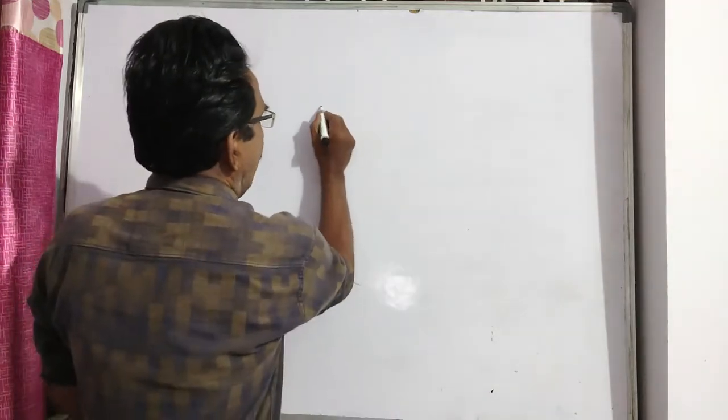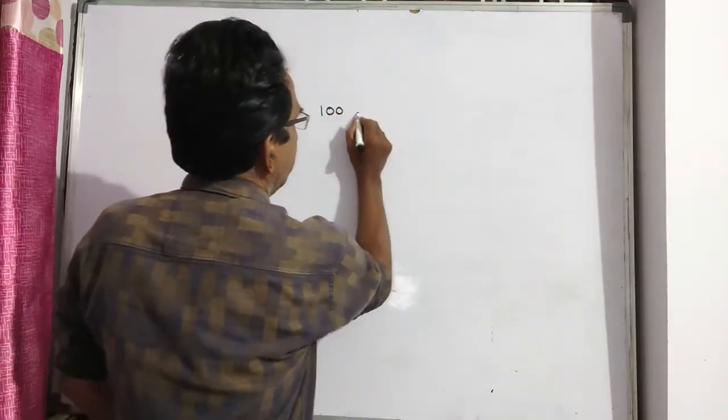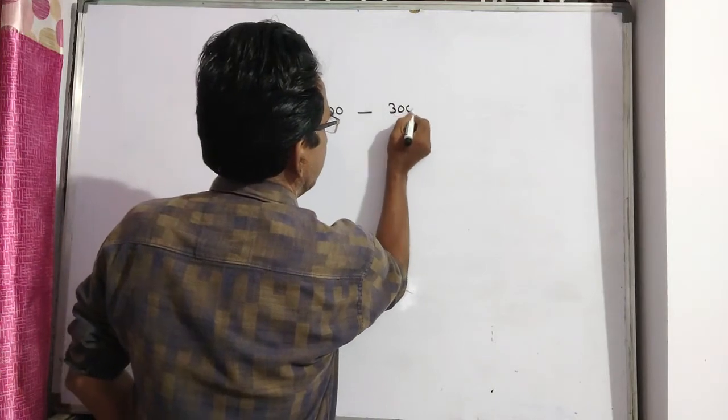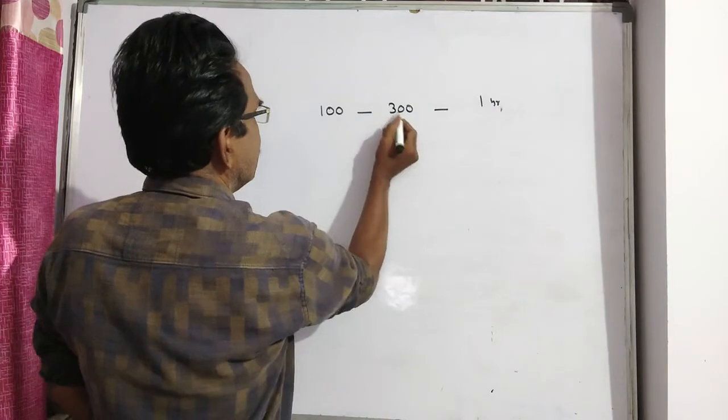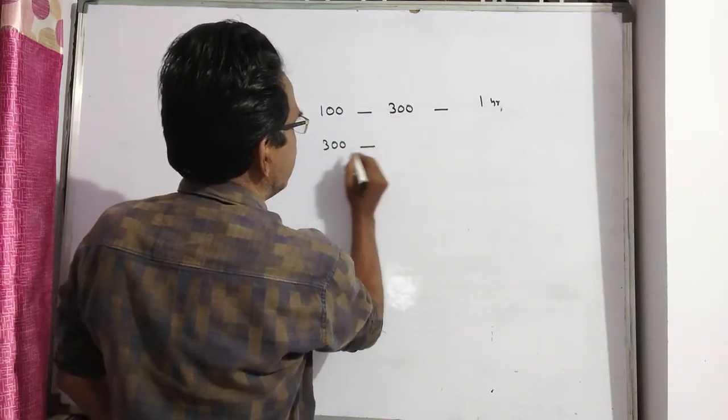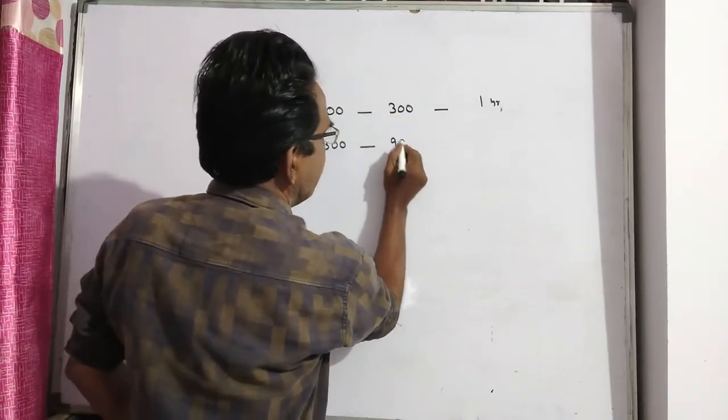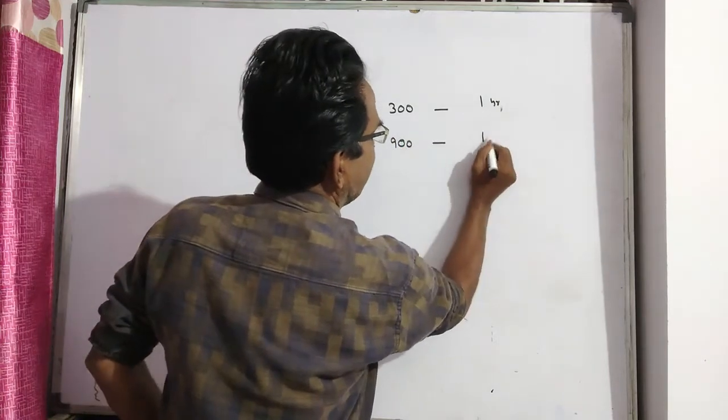The amount is tripled in every one year. That is, 100 rupees becomes 300 in one year, and this 300 again becomes 300 into 3, which is 900 in another one year.